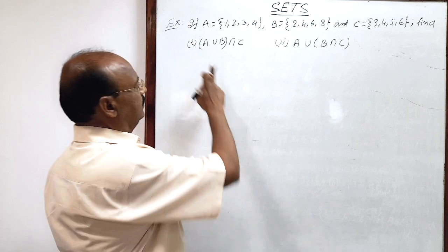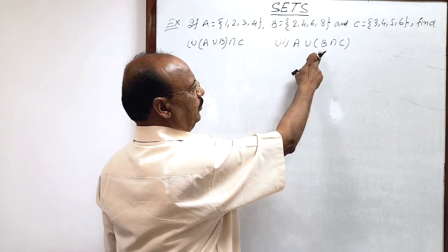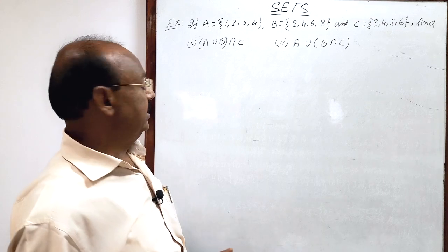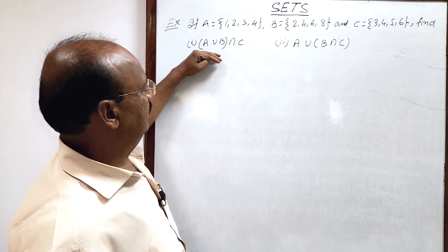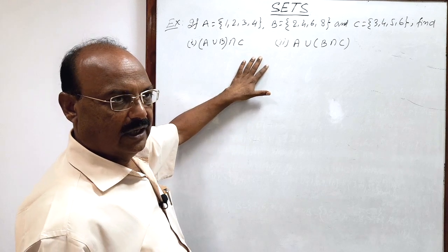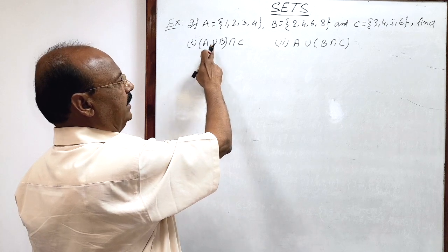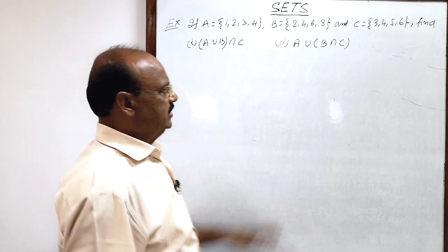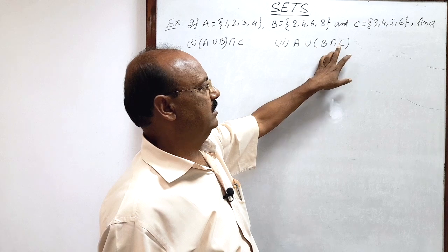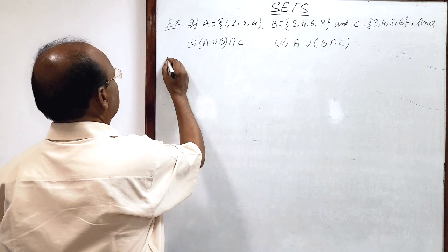We have to find: first, (A∪B)∩C, and second, A∪(B∩C). We need to take care of a very basic concept — first evaluate the operation inside the bracket. In the first question, find A∪B first, then find the intersection with C. In the second question, find B∩C first, then apply A union with that result.